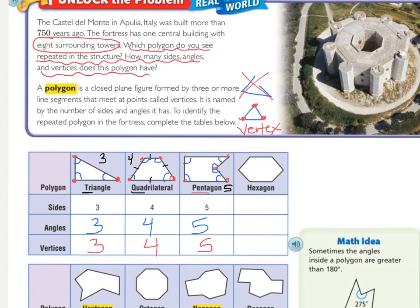Hexagon — 'hex' means six. So how many sides are there? One, two, three, four, five, six. How many angles? One, two, three, four, five, six. And how many vertices? One, two, three, four, five, six.